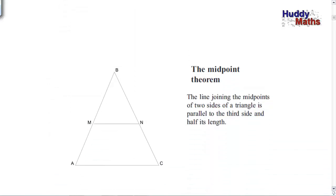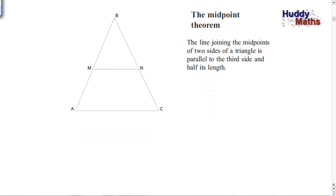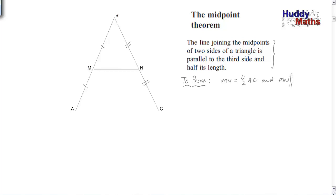I've picked a fairly basic theorem — the midpoint theorem. This is called the midpoint theorem, something you would have done in previous study. The line joining the midpoints of two sides of a triangle is parallel to the third side and half its length. M is the midpoint of one side, and N is the midpoint of another side. MN is the line joining those midpoints.